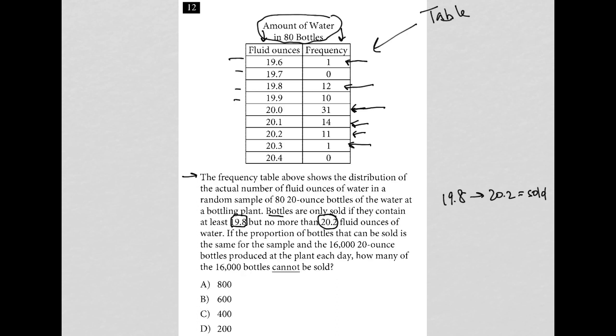All right. So I need to know what proportion of the 80 bottles represented in my table cannot be sold. And then I can use that to create a proportion to determine how many of the 16,000 bottles cannot be sold. So how many can't be sold here?